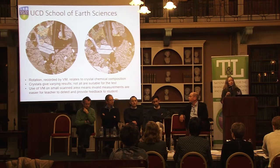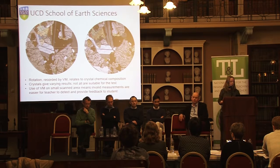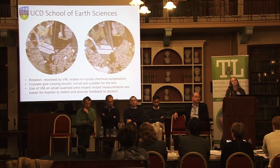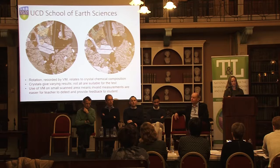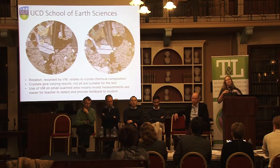The virtual microscope also allows you to rotate pre-selected areas of the sample, as you would with a real physical microscope. This is used in an example from UCD where the extinction angle of plagioclase is dependent on its chemical composition. By using the virtual microscope, we can direct students to a specific pre-selected area of the sample to make those measurements, making it easier to identify student errors and provide useful feedback.